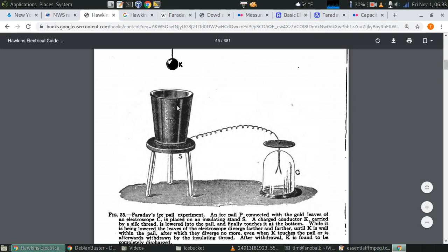What that's going to do is induce a charge separation in the bucket. Electrons are going to flock to the inner surface of the bucket to try to get as close to K as possible. That will leave a positive charge on the outer surface, which the electroscope can measure.